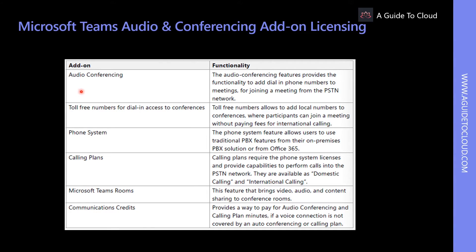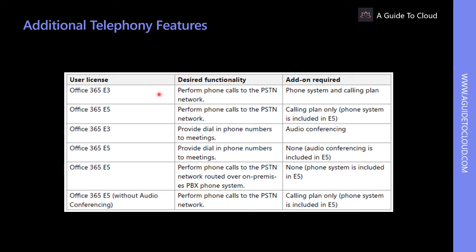There are add-ons for audio conferencing, toll-free numbers, phone system, calling plans, Teams rooms, and communication credits. It is important to know the licensing of other Microsoft 365 services as well. Please note that if users aren't assigned to SharePoint Online and Exchange Online licenses correctly, some Teams features will not work.